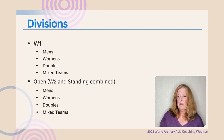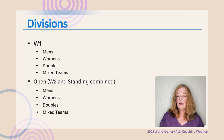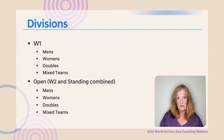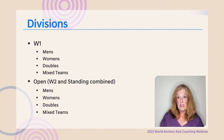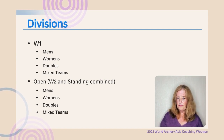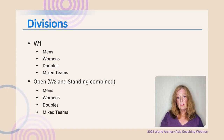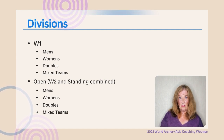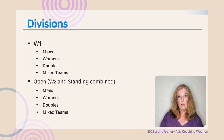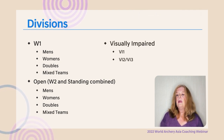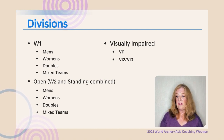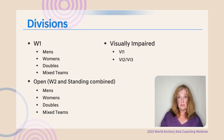For W1, there are men's divisions, women's divisions, doubles (two men), and mixed teams. For the open division combining W2 and standing archers, there are men's, women's, doubles, and mixed teams — a man and a woman shooting the same type of bow. For visually impaired, VI1 athletes all shoot together, while VI2 and VI3 shoot in the same division.